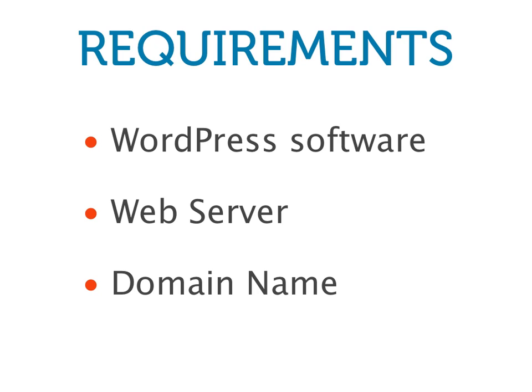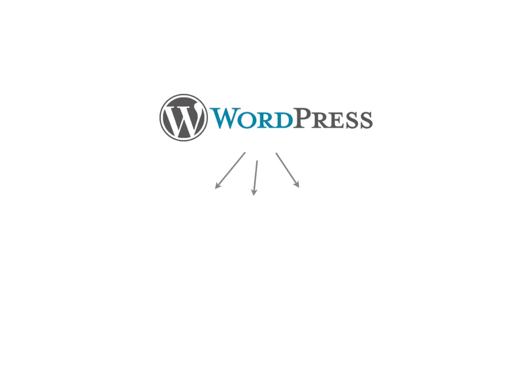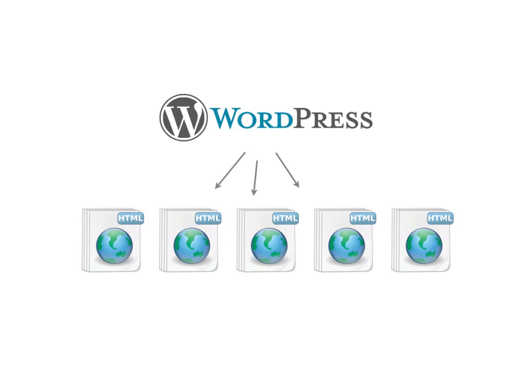To create a WordPress website, you need three ingredients. First is the WordPress software. WordPress is the engine that produces the web pages on your website. Web pages are what visitors see in their web browser when they visit a site. All web pages are written in HTML code. Luckily, you don't need to learn HTML code if you use WordPress — WordPress will generate the HTML code for your website automatically.